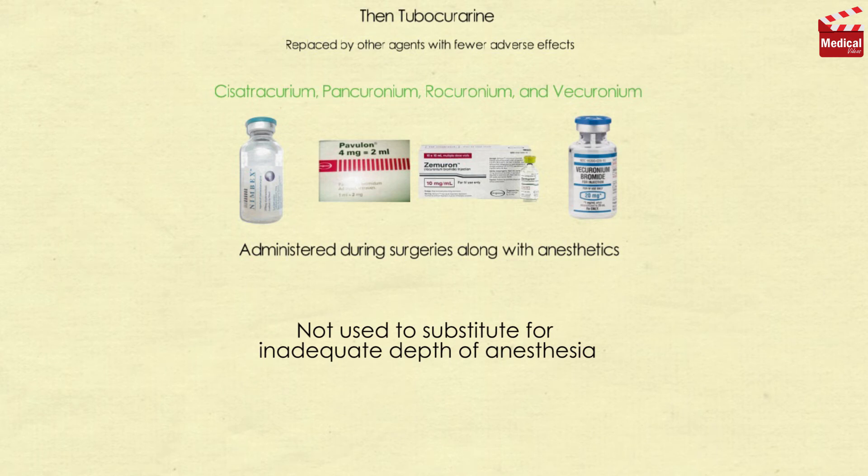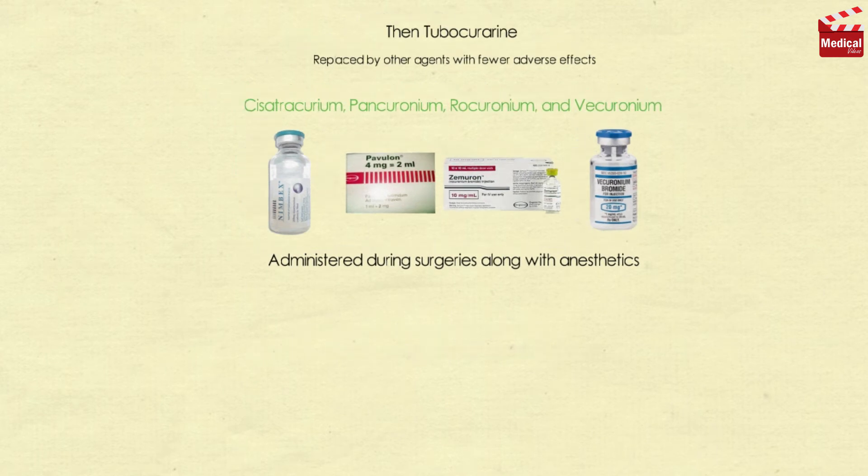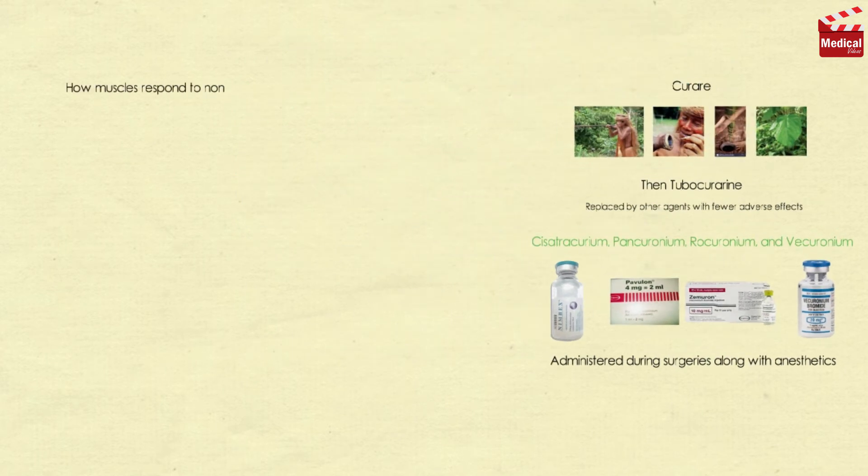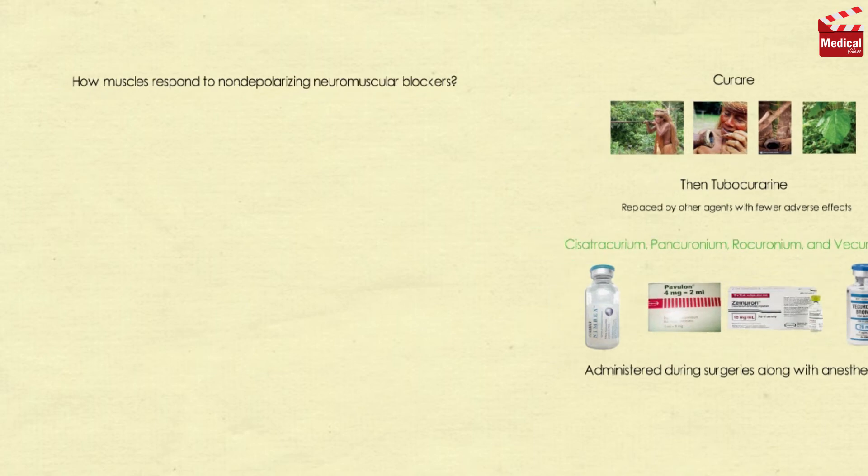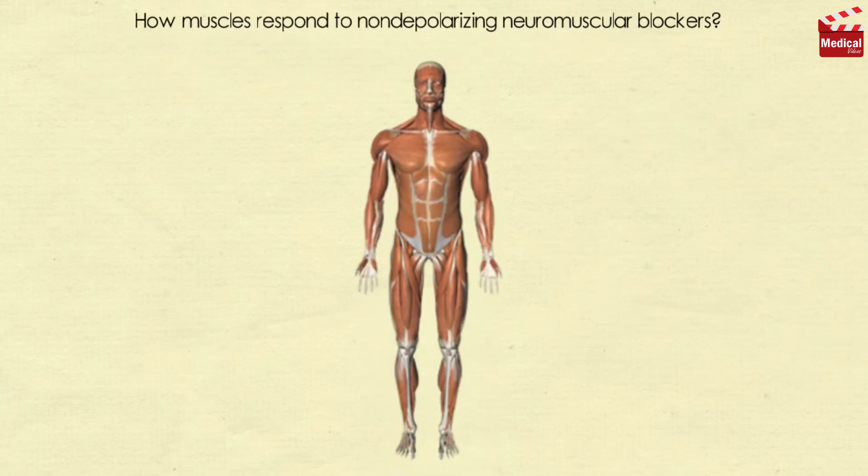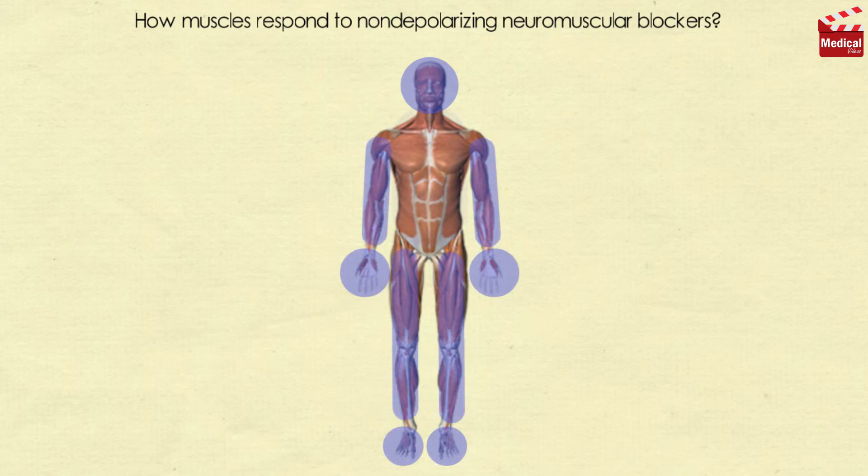How do muscles respond to non-polarizing neuromuscular blockers? Not all muscles are equally sensitive to blockade. Small, rapidly contracting muscles of the face and eye are most susceptible and are paralyzed first, followed by the fingers, limbs, neck and trunk muscles. Next, the intercostal muscles are affected and lastly the diaphragm. The muscles recover in the reverse manner.